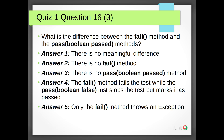Quiz 1 Question 16, the last question: What is the difference between the fail method and the pass method? Answer 1: There is no meaningful difference. Answer 2: There is no fail method. Answer 3: There is no pass method. Answer 4: The fail method fails the test while pass boolean false just stops the test but marks it as pass. Answer 5: Only the fail method throws an exception. The correct answer is 3: there is no pass method.